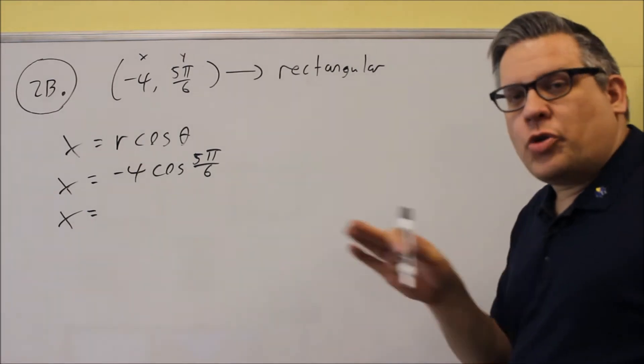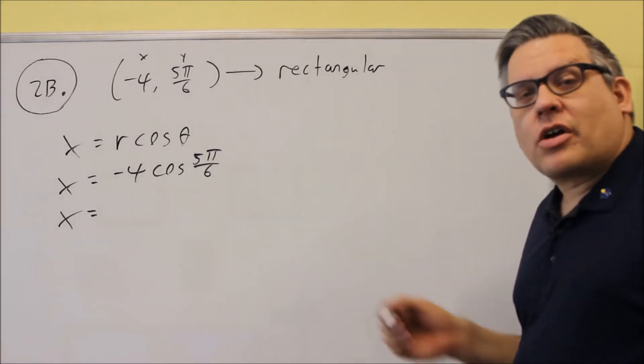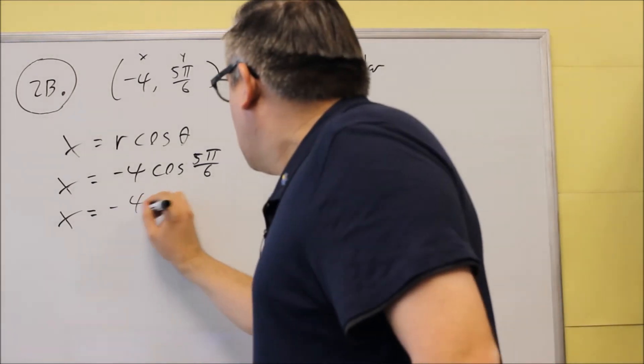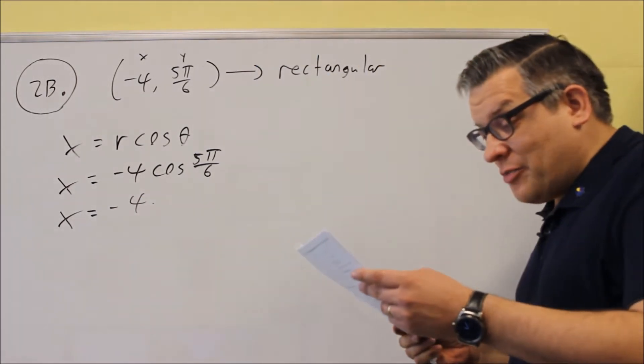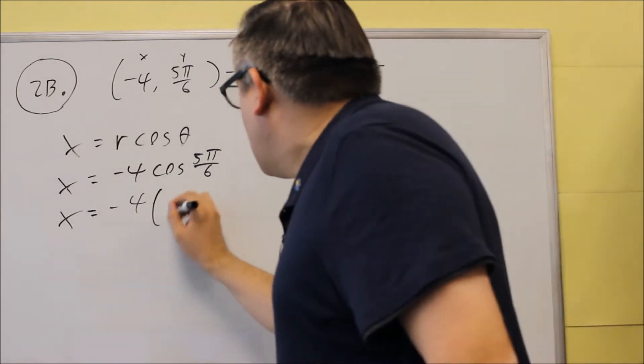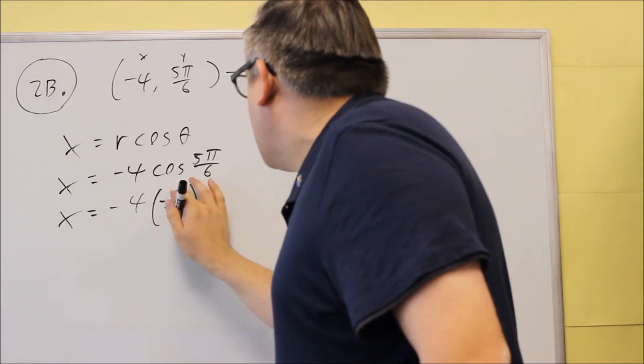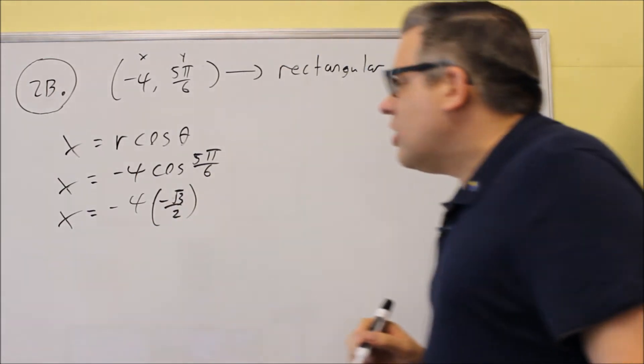Again, for these kind of problems, don't use decimals. Make sure you use the exact value that comes from the unit circle. So if you look at a unit circle on this one, we have cosine 5 pi over 6, which is negative square root of 3 over 2. And right there, that's going to be the exact value that you want to use.